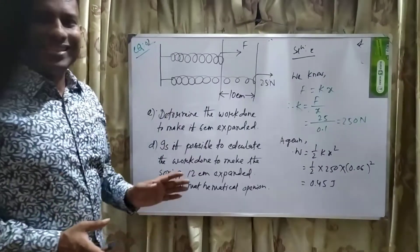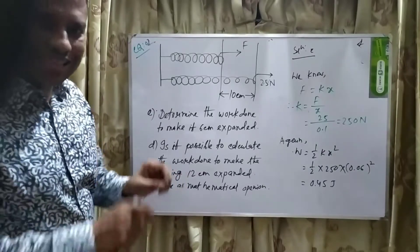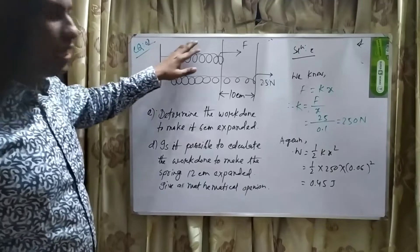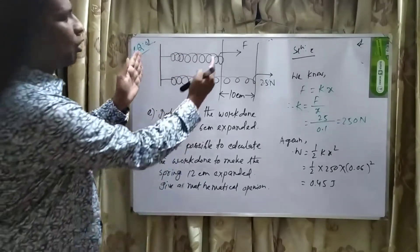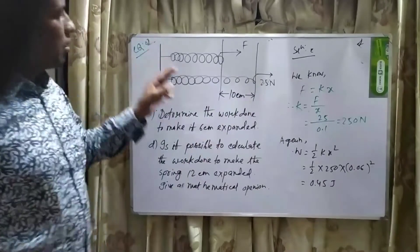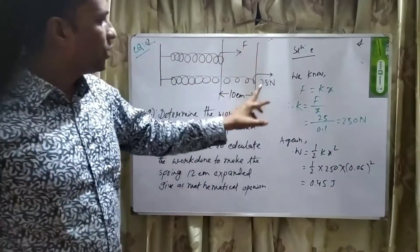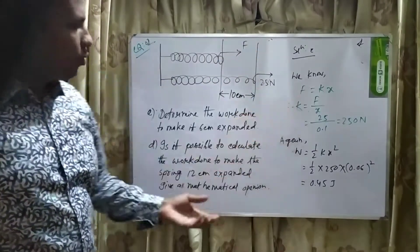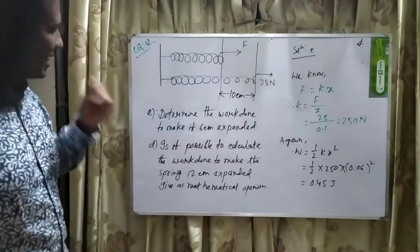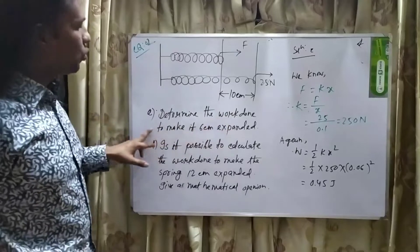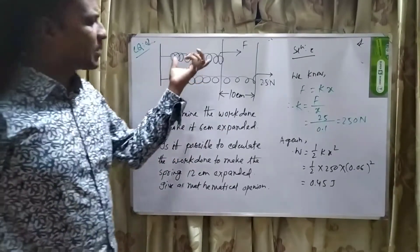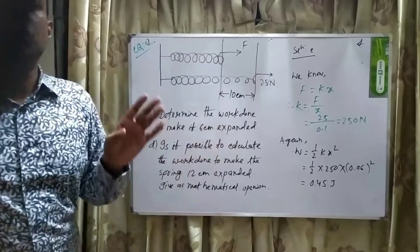Students, this is CQ number 2 on this lecture. There is one spring — this is its normal condition and this is its expanded condition. By applying force F of 25 N, we have extended the spring by 10 cm. The first question is: determine the work done to make it 6 cm expanded.